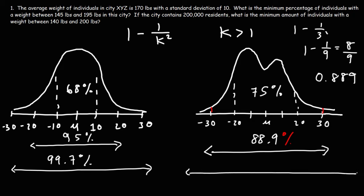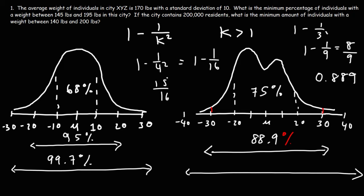If you want to find out how much is within four standard deviations of the mean, replace k with 4: 1 minus 1 over 4 squared equals 1 minus 1 over 16, which is 15 over 16, or 0.9375. So at least 93.75% of the data lies within four standard deviations. The actual number can be higher, but this is the minimum value.